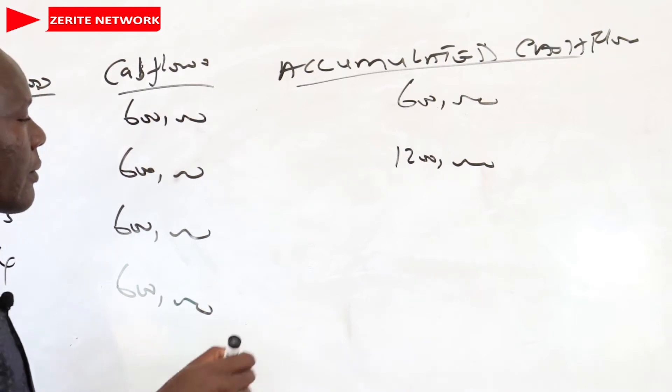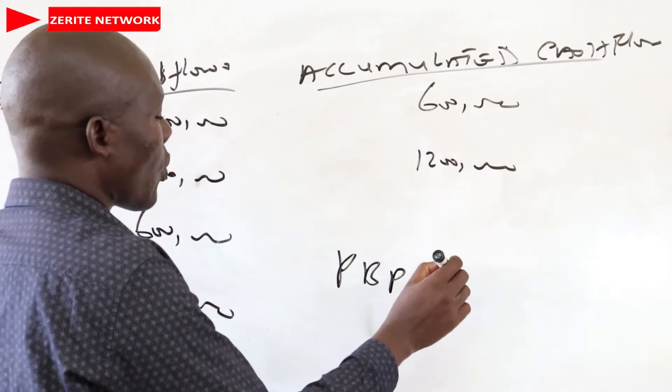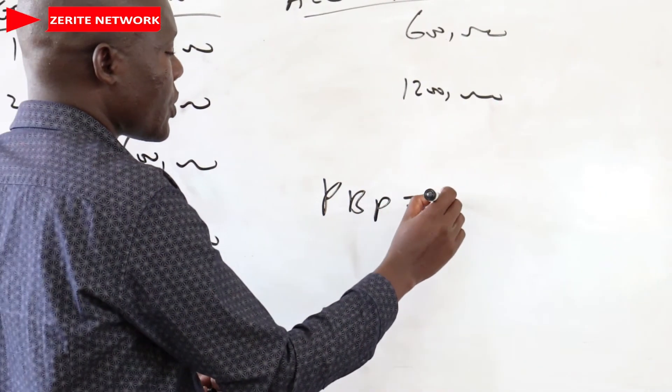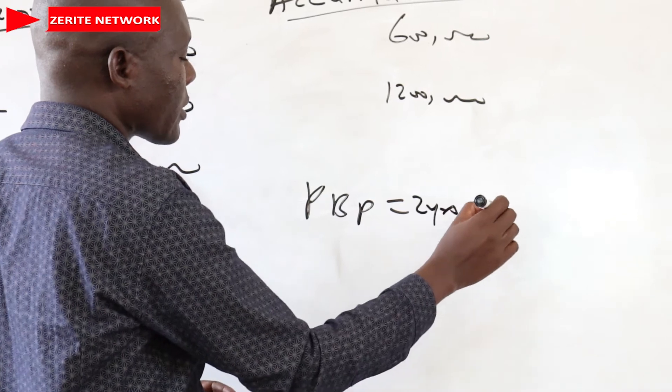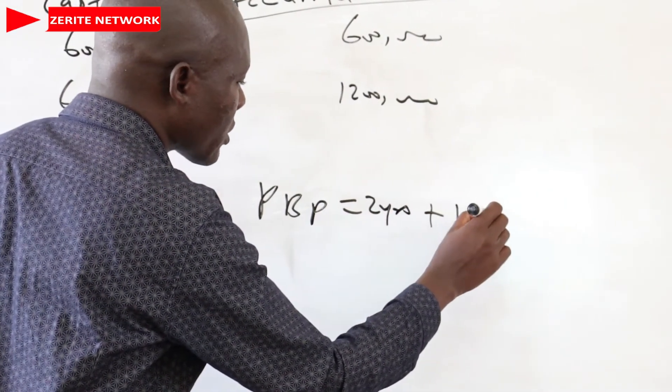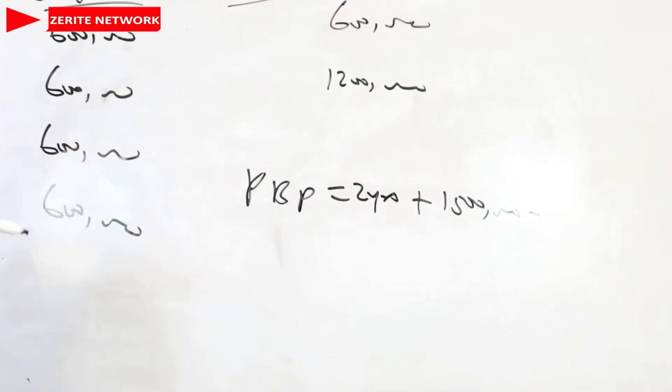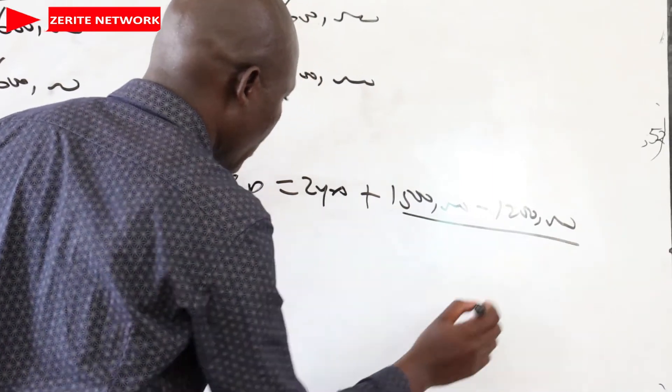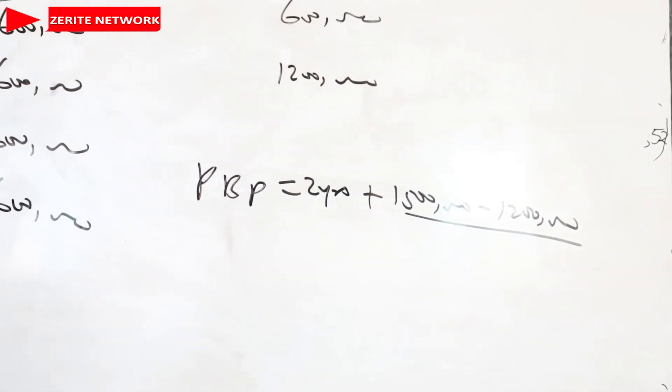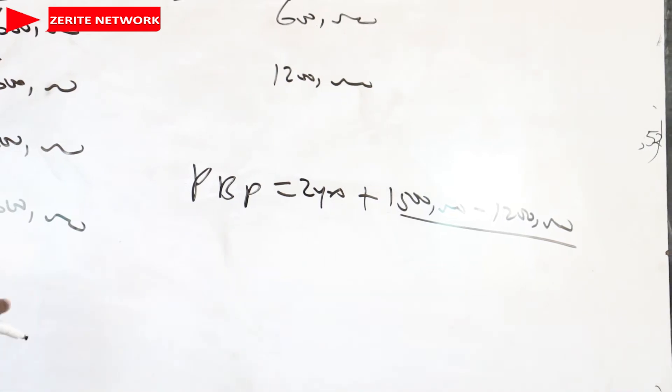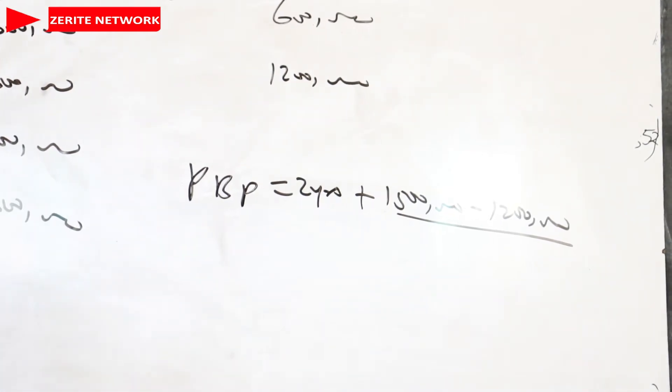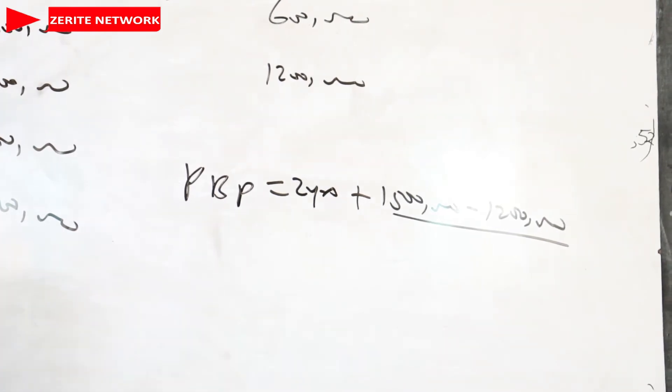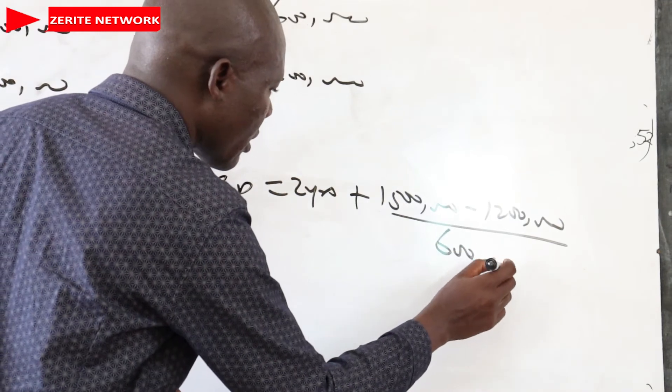So we'll come here and say that the payback period will be the first two years, which we have recouped the $1,200,000. So two years plus the amount we invested was $1,500,000 minus the amount already we have recouped, which is $1,200,000, over the actual cash flow of the preceding period. The preceding period means the period after the second period, which is $600,000. So we'll come here and write the $600,000.